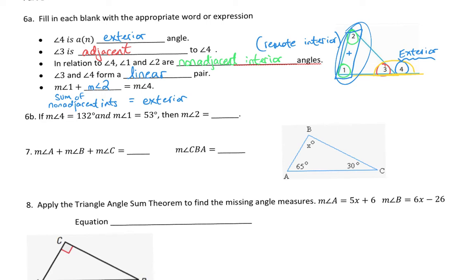The next problem, 6B. Still goes along with the figure. It says that angle 4 is 132, so the exterior angle is 132 degrees. It says that angle 1 is 53 degrees, and it wants us to find angle 2.